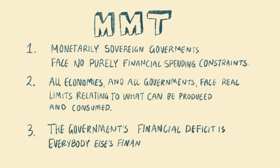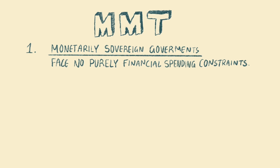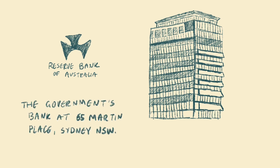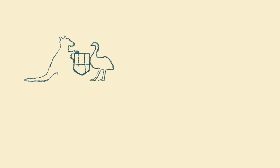A monetarily sovereign government means the national government of a country is in control of its own currency and finances. A government has monetary sovereignty when the national government can spend its own currency — for example, the Reserve Bank of Australia, the government's bank, facilitates federal government spending by typing numbers into private bank accounts on the government's behalf — and when the government taxes in its own currency, as the ATO only accepts Australian dollars.